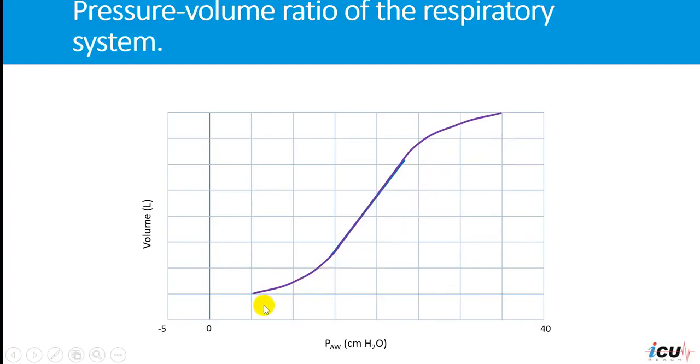In general it is sigmoid in shape with two extremities where elastance is greater and a relatively linear intermediate zone in which elastance is lower. These three segments are separated by the lower inflection point and the upper inflection point.